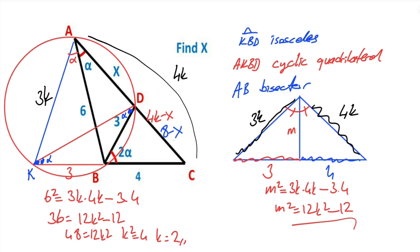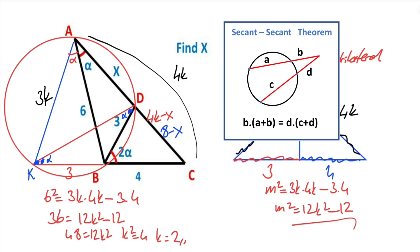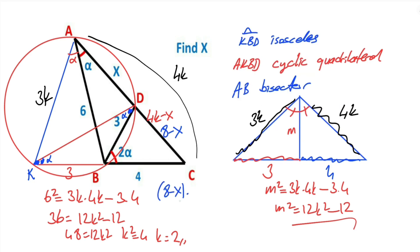According to the secant theorem, 8 minus x times the whole length 8 must equal the first part 4 times the second part 7.